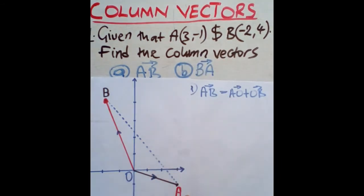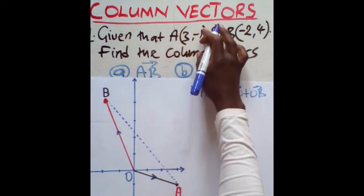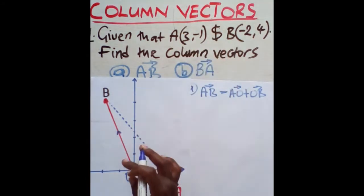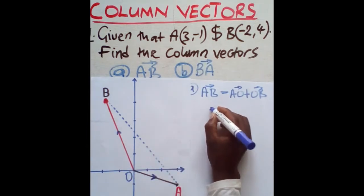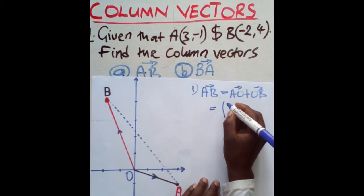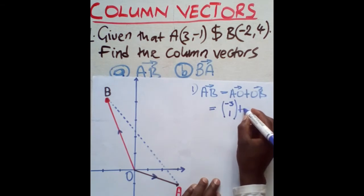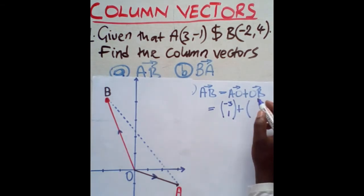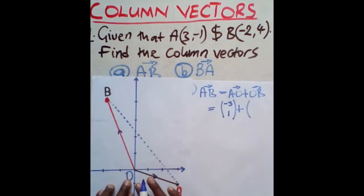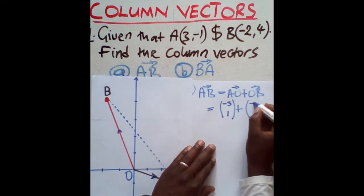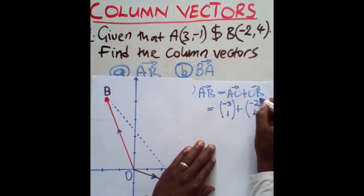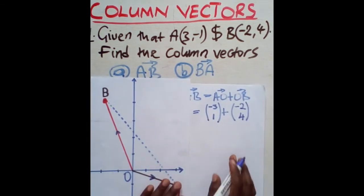Moving from A to O means changing the signs, so AO becomes (-3, +1). Then for OB — moving from O to B in the same direction as the arrow — there is no change of signs, so OB is (-2, 4). We now substitute: AO = (-3, 1) plus OB = (-2, 4).